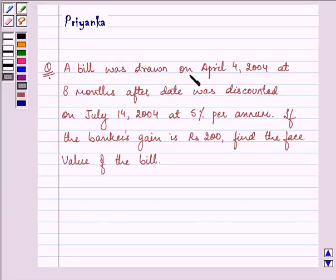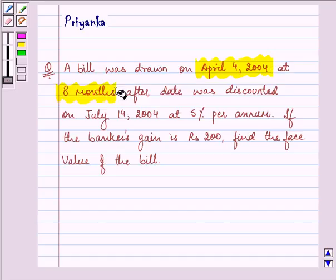It says a bill was drawn on April 4, 2004 at 8 months after date and was discounted on July 14, 2004 at 5% per annum. If bankers gain is rupees 2000, find the face value of the bill.